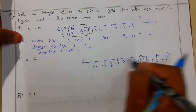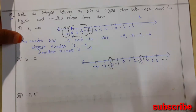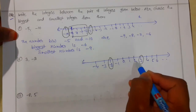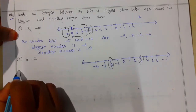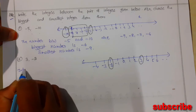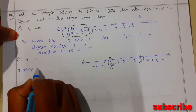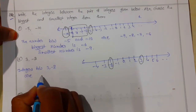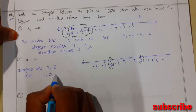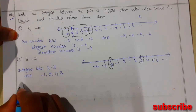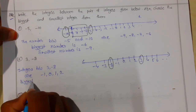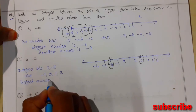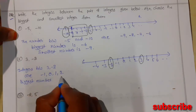The numbers which lie between 3 and minus 2 are: minus 1, 0, 1, 2. So the integers between 3 and minus 2 are minus 1, 0, 1, 2. To find the biggest one, we look for the rightmost number among these four, which is 2. So the biggest number is 2.